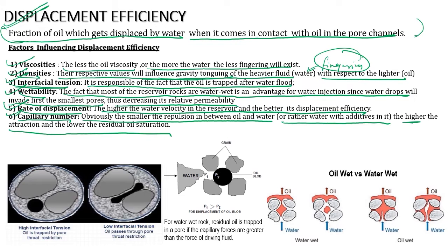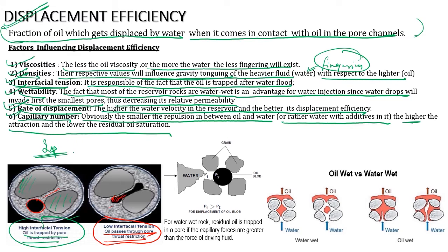When having high IFT, oil is trapped by pore restriction — between two sand grains there is an oil globule that cannot flow past because of interfacial tension. By some method reducing IFT, this oil will pass through the pore restriction. When having low IFT, oil changes its shape and can pass through the sand grains. When IFT is high, oil will not flow through; when IFT is low it changes shape and moves through.